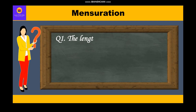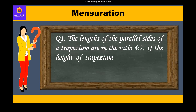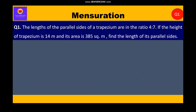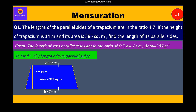The length of the parallel sides of a trapezium are in the ratio of 4 is to 7. If the height of trapezium is 14 meters and its area is 385 square meters, find the length of its parallel sides. Given to us is the length of two parallel sides are in the ratio of 4 is to 7, height is equal to 14 meters, area is equal to 385 square meters — to find the length of the two parallel sides. So let's start with the solution.